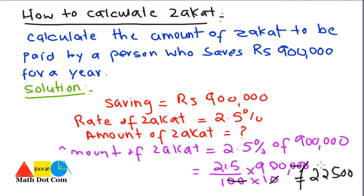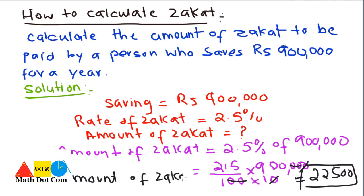The answer is 22,500. So this is the amount of zakat you have to pay if you have an amount of 9 lakh saved for a year. To find the zakat, you just have to use the concept of percentage — find the percentage of your amount — and the rate is fixed at 2.5%.